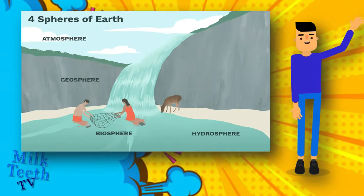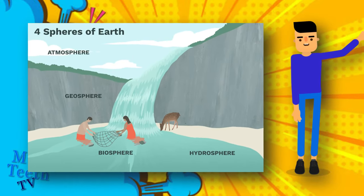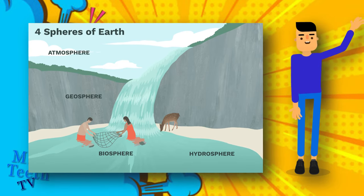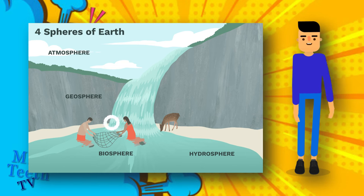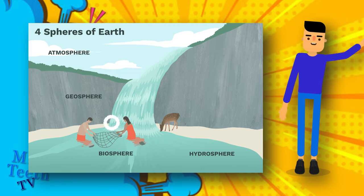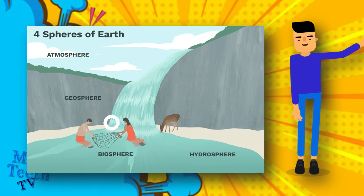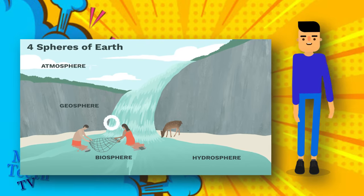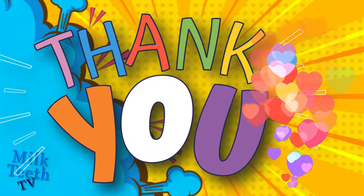So the lithosphere, hydrosphere, and atmosphere are all closely connected with each other, and because of this interaction, the biosphere is dependent upon the three of them. Thank you so much for watching — hope you had a wonderful time watching this video, and stay tuned for more such videos.